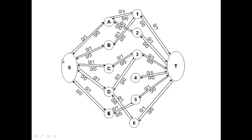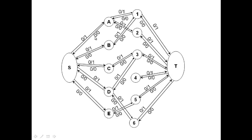Let's say we found the path s→a→1→t. We send one unit of flow on these edges, so the capacity reduces by 1 and the flow increases by 1. The back edge becomes -1/1. Similarly, each edge on this augmenting path becomes 1/0 with back edge -1/1.